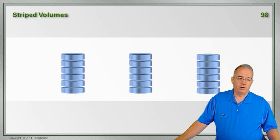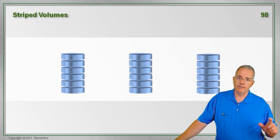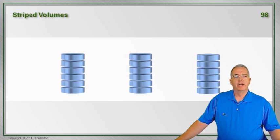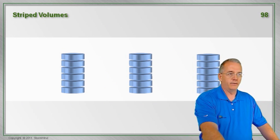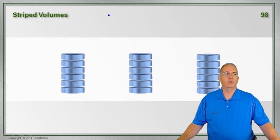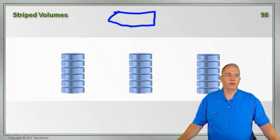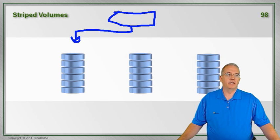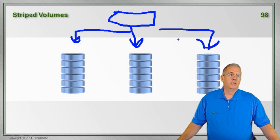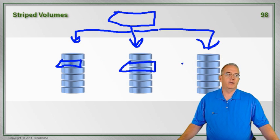Another one that we have is a stripe volume. A stripe volume is different because what it does is it writes to all of the drives at the same time. So here's my little block of data that I want to store, and it stripes it across all three drives.